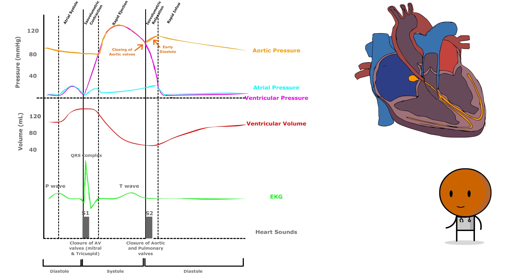However, the aorta, being elastic, maintains a high pressure despite the closure of the aortic valve, due to the recoil of its walls, which propels the blood forward into the systemic circulation.